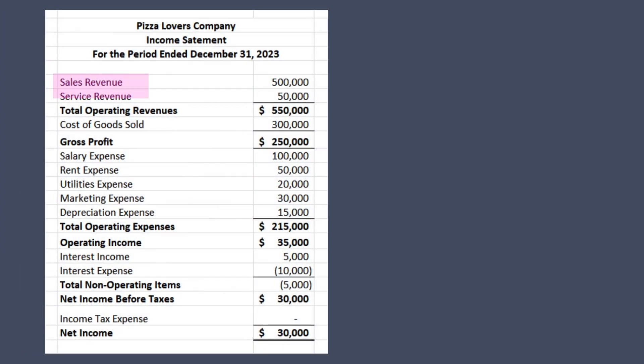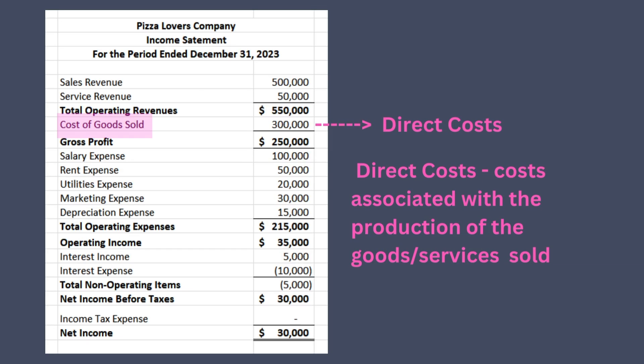A typical multi-step income statement contains the following line items. At the top we have gross revenue — this figure includes the total income generated from all business operations including sales of products and other services. The term 'gross' is used to show that no expenses have been deducted from the amount. Next we have cost of goods sold, which includes the direct costs associated with production of the goods sold. In a retail business it would be the cost of inventory sold; in a manufacturing business the calculation would be more complex.